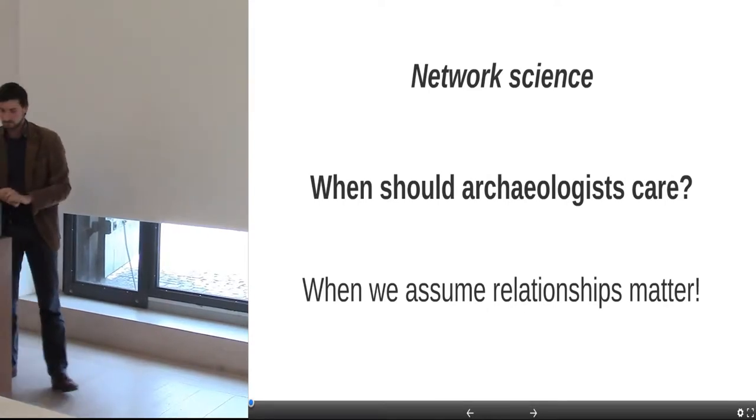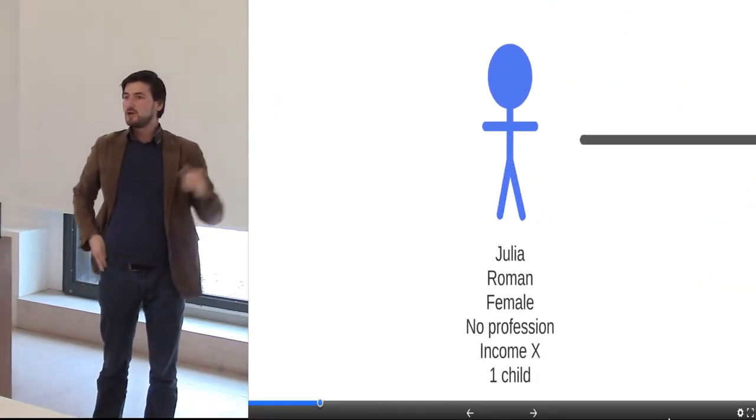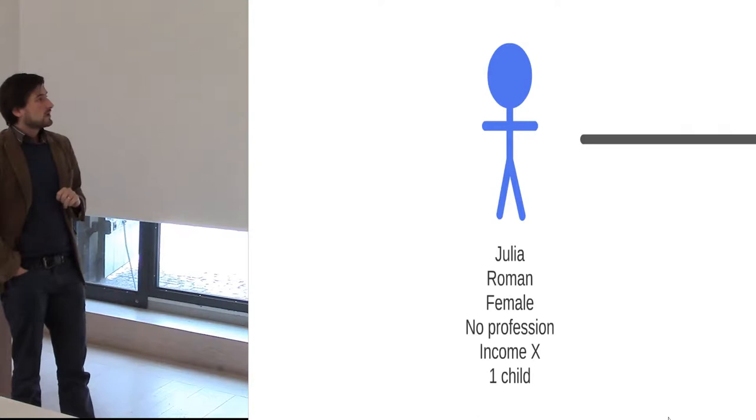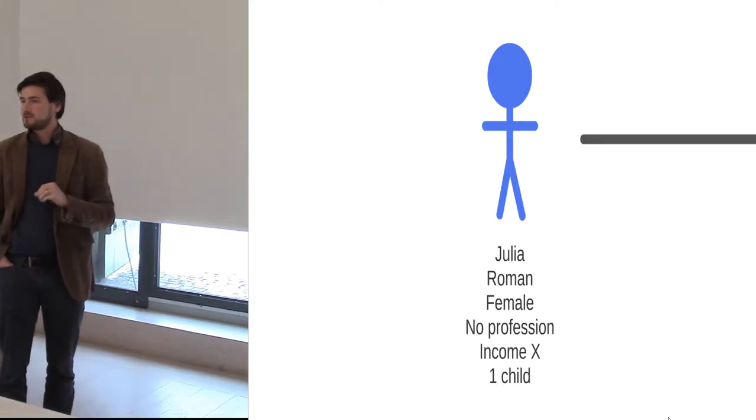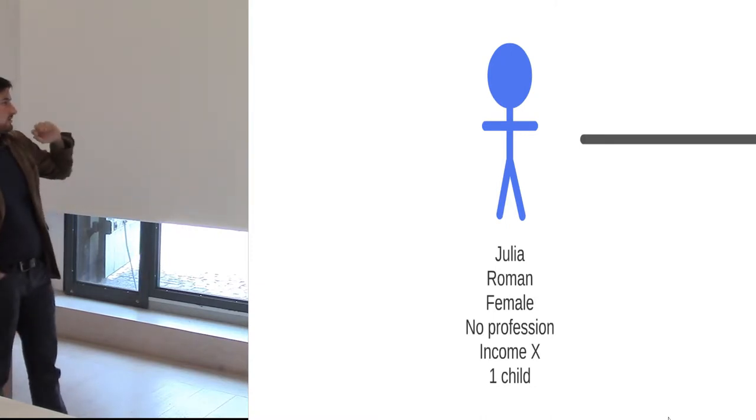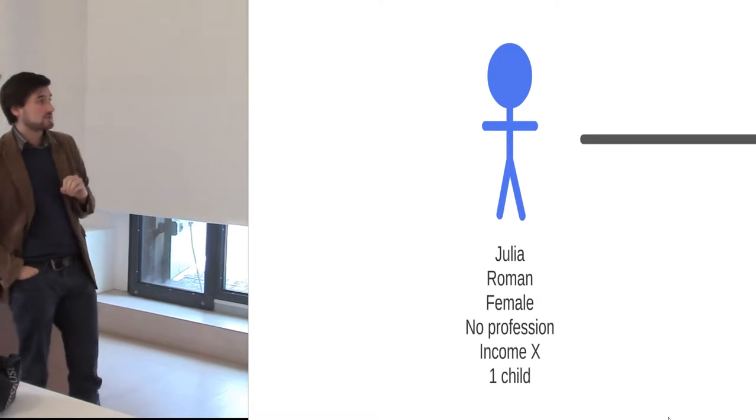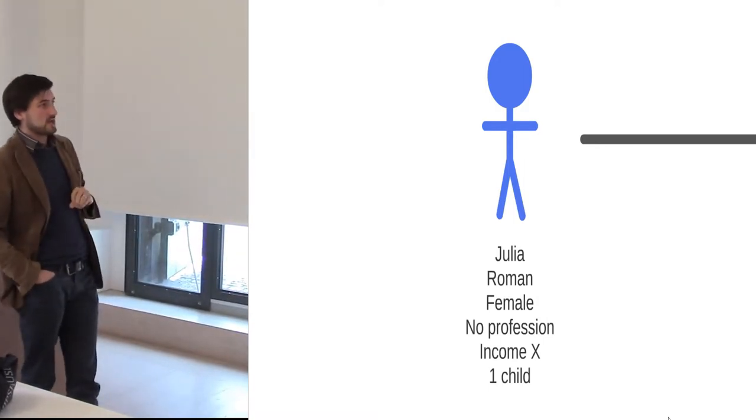There's three ways in which relationships can matter in a way that you can formalize and I'd like to illustrate this through this analogy. So we have a stick figure that represents an individual human and we have some information about this human. It's basically attribute information. So we have a name, the person is Julia, she's female, she's a Roman, she doesn't have a profession, she has a certain income and she has one child.